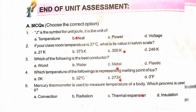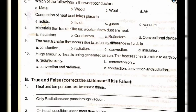Which material is the worst conductor? Option D: air. Conduction of heat best takes place in option A: solid. Materials that trap air, like wool and sawdust, are option A: insulators. Heat transfer that occurs due to density difference in a fluid is option C: convection.